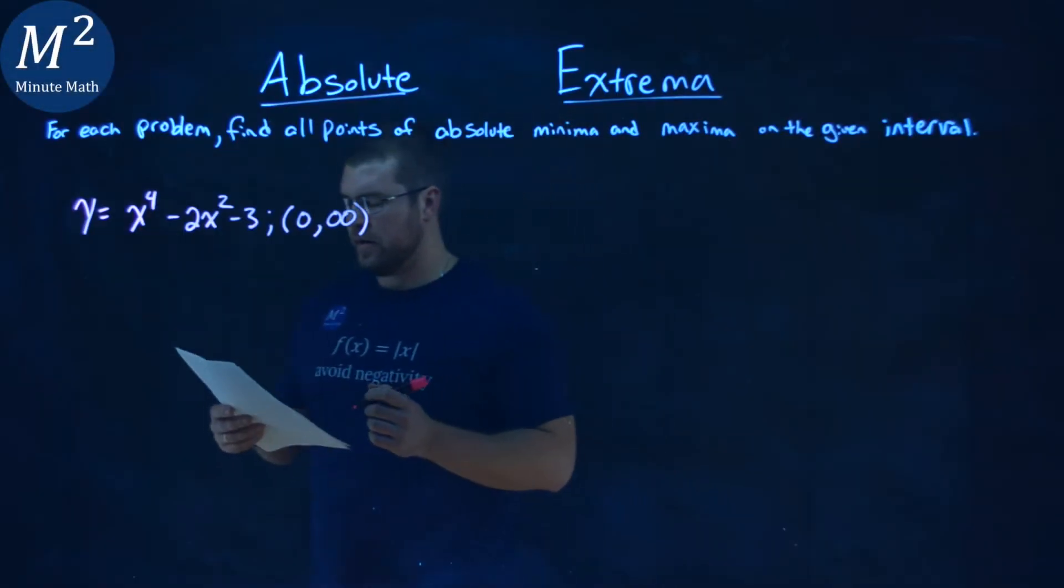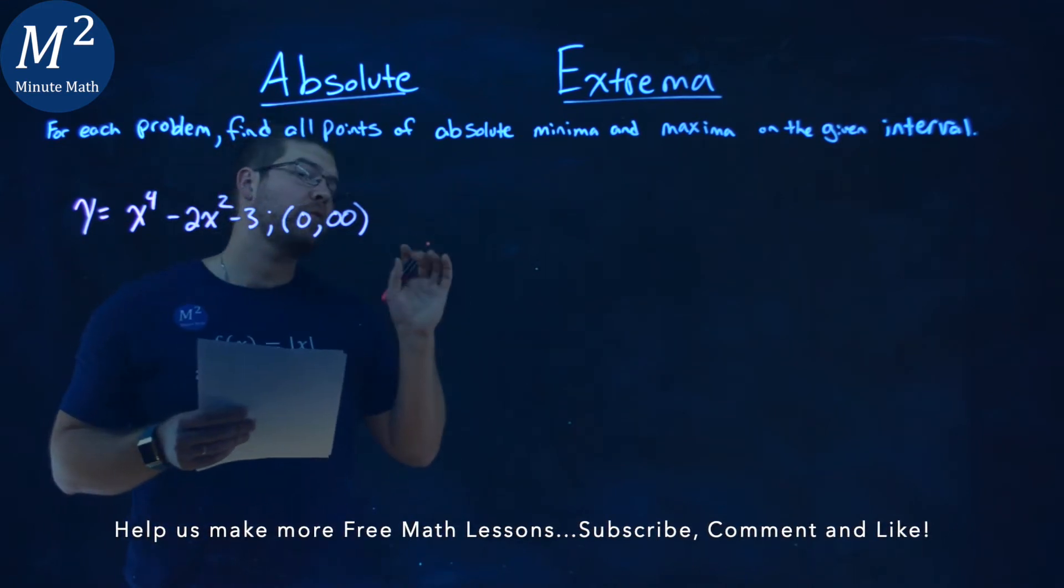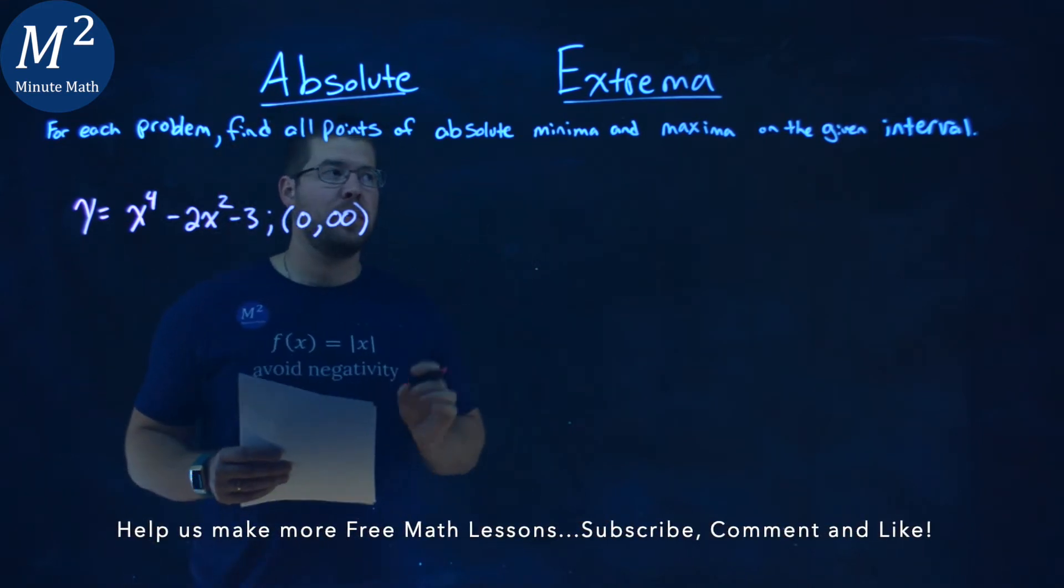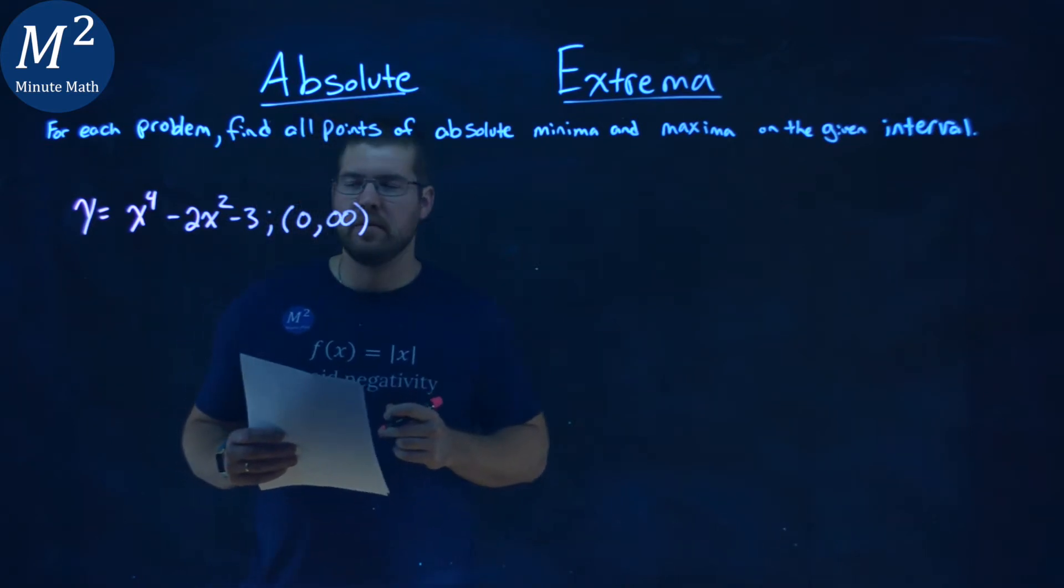We're given this problem right here: y equals x to the fourth power minus 2x squared minus 3, and we want to find all points of absolute minimum and maxima on our given interval from 0 to infinity, and notice the parentheses there.